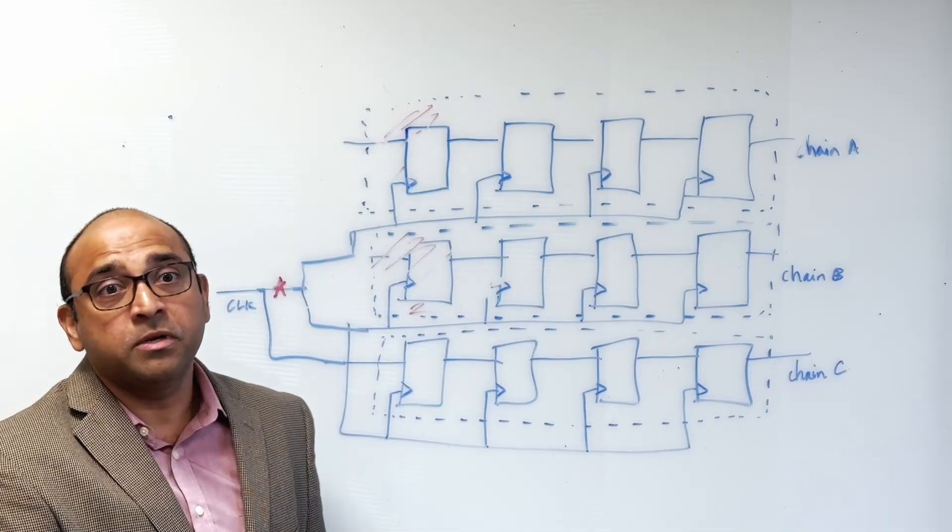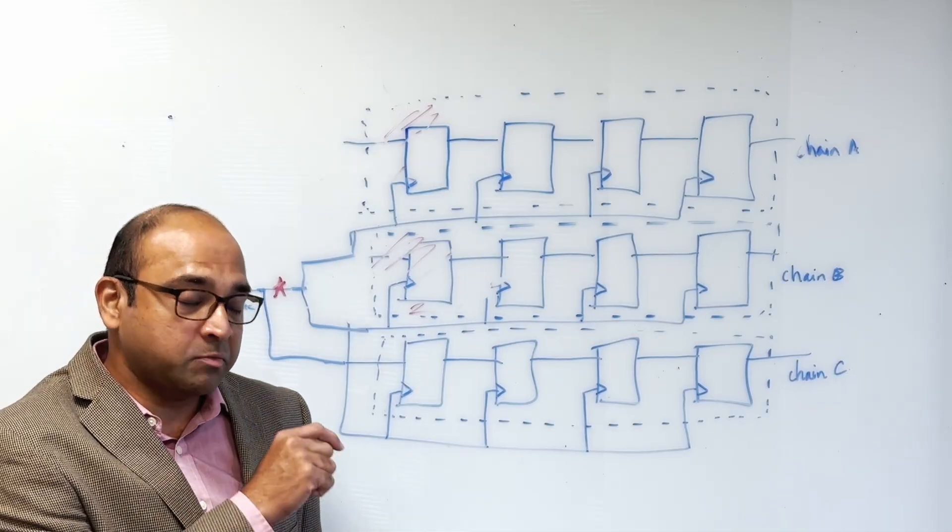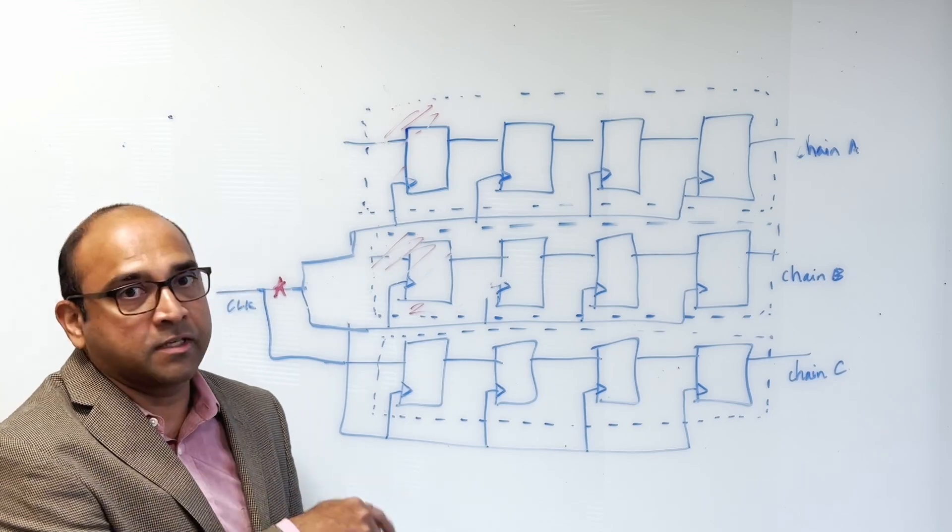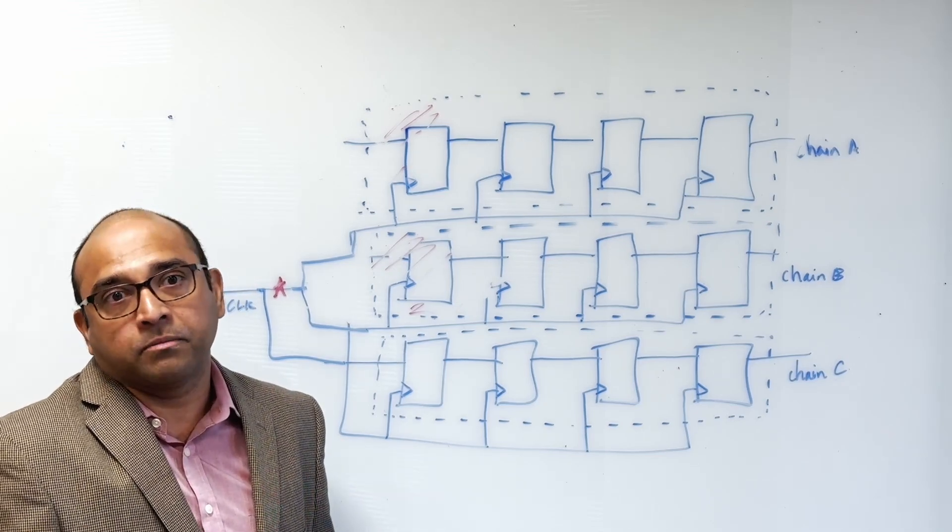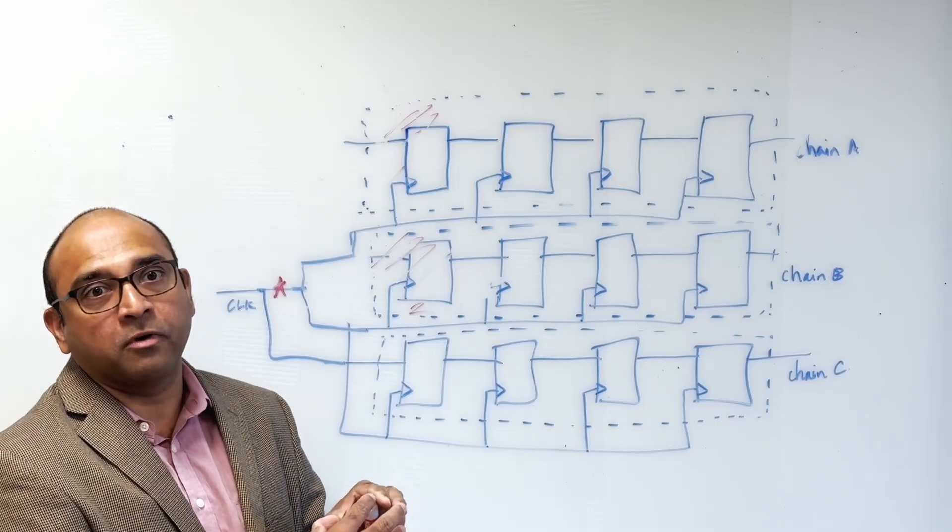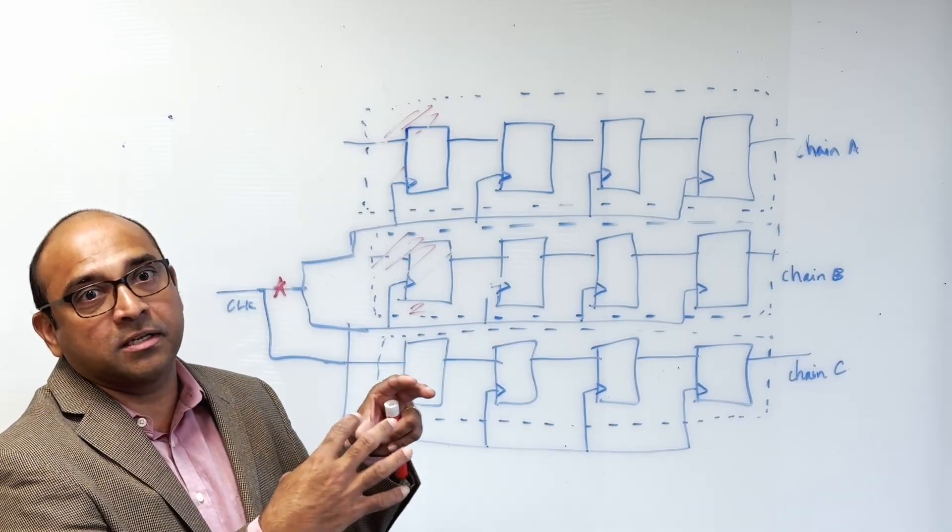Those are all things we're aware of and working towards finding. We also have another new piece of technology called cell-aware chain diagnosis that looks specifically for defects inside of scan cells. These are scan cells that are sometimes known as multi-bit flops, where you have a group of four or eight or 16 scan cells all put together in a standard cell block.